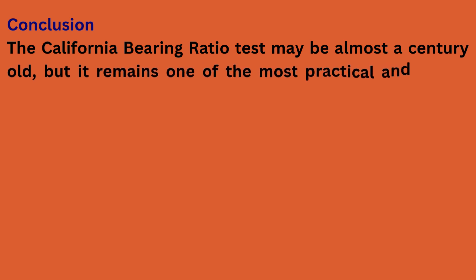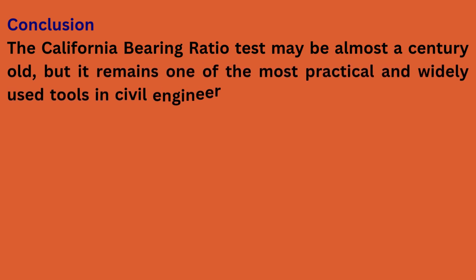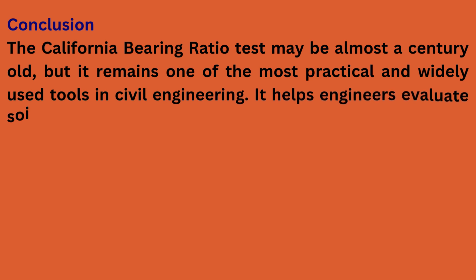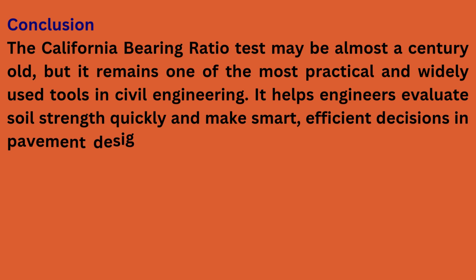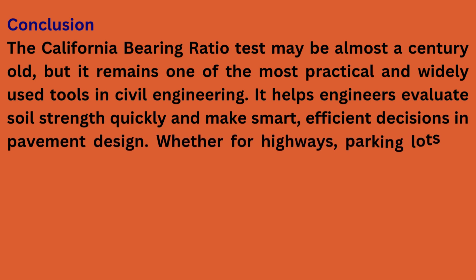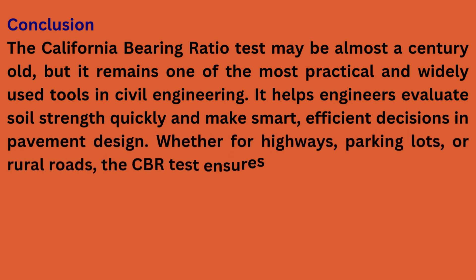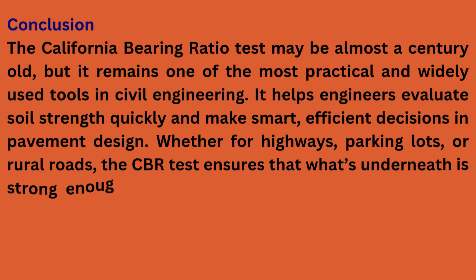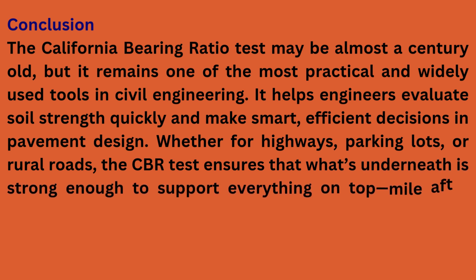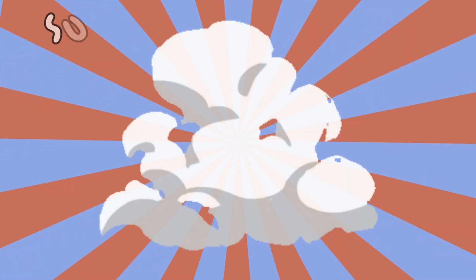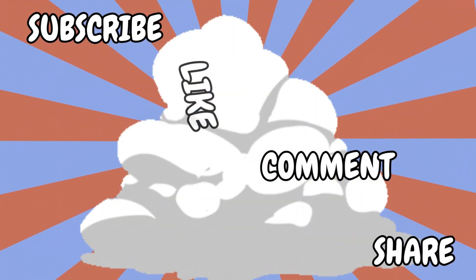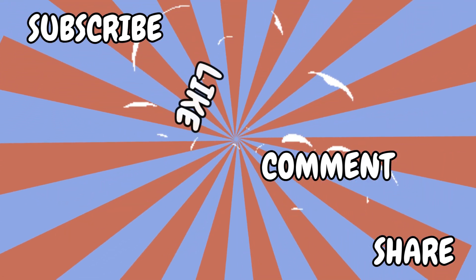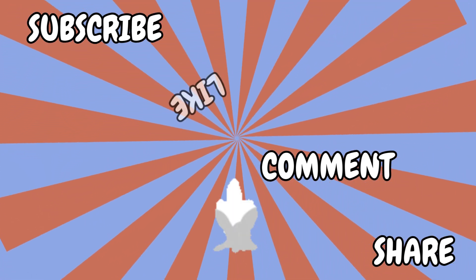The California Bearing Ratio test may be almost a century old, but it remains one of the most practical and widely used tools in civil engineering. It helps engineers evaluate soil strength quickly and make smart, efficient decisions in pavement design — whether for highways, parking lots, or rural roads. The CBR test ensures that what's underneath is strong enough to support everything on top, mile after mile. Thanks for watching Blueprint to Reality. If you're passionate about the science beneath the surface, make sure to subscribe for more in-depth civil engineering content.